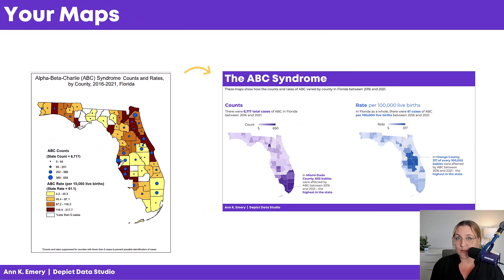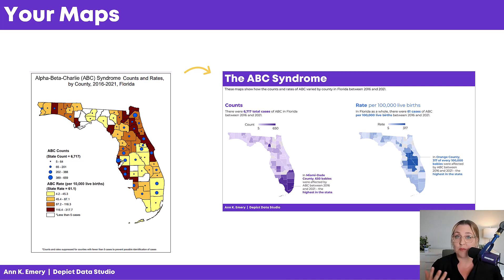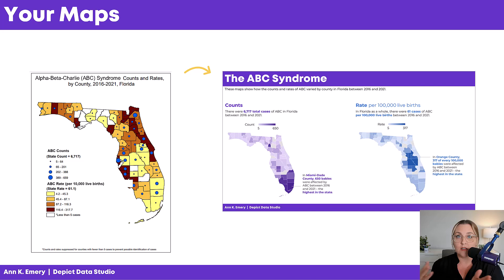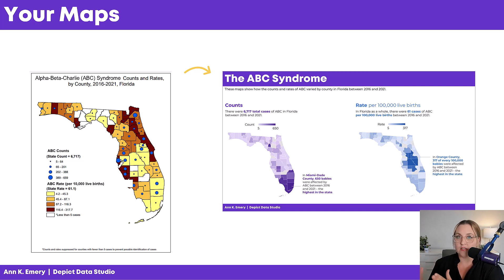Remember where we started? We started with a one-pager with two variables smushed on top of each other. And then we have to time out because our brains are good at single-tasking, not multitasking. So if we start with two variables, we end with two maps — small multiples — so that our audience can read them one at a time. They can look at the patterns in one map, and then they can look at the patterns in the other map. Nice and easy, nice and sequential.